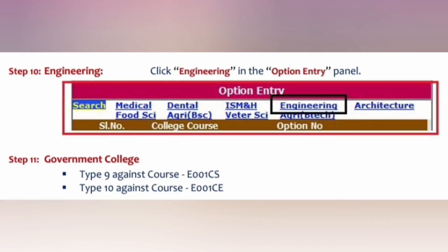The same combinations can be used for other programs apart from engineering. Keep selecting tabs and keep putting numbers for as many option entries as you want. You can also go to government engineering colleges like Government Engineering College Hassan, Government Engineering College Chikmangalur, Government Engineering College Samaraj Nagar — the whole list is available there and you have to save them.